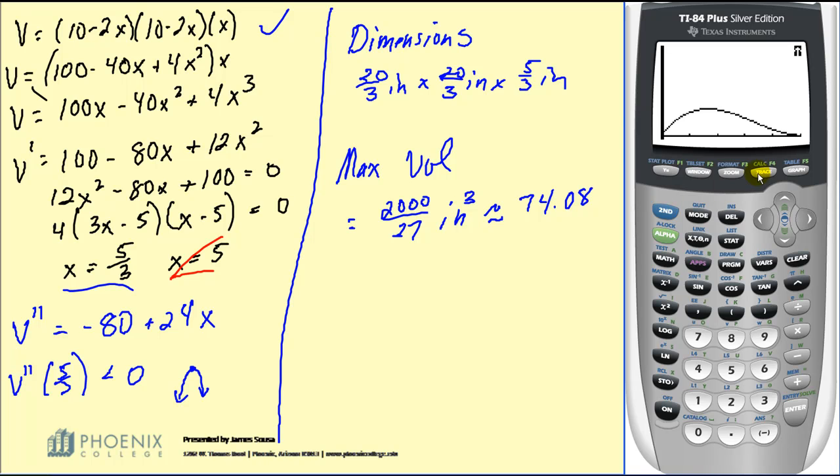If I hit second trace, which brings up the calculation menu, bring up option four, and then move to the left, move to the right of that high point, we can verify that the location of the maximum is when x equals five-thirds.